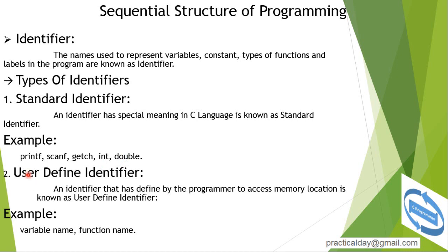What is a user-defined identifier? An identifier that is defined by the programmer to access a memory location is known as a user-defined identifier. For example, it may be a variable name, function name, method name, or structure name.